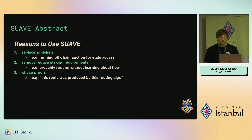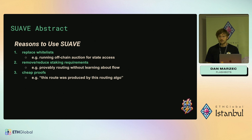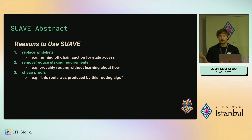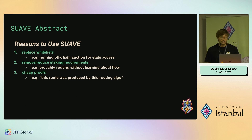Cheap proofs. Right now everyone's exploring ZK proofs, FHE, MPC — some of those are more multi-party computation as opposed to a proof platform. We eventually hope to migrate Suave towards one of these new technologies. But right now we use an SGX, or trusted execution environment, to sign off on computation, and that's basically extremely cheap.